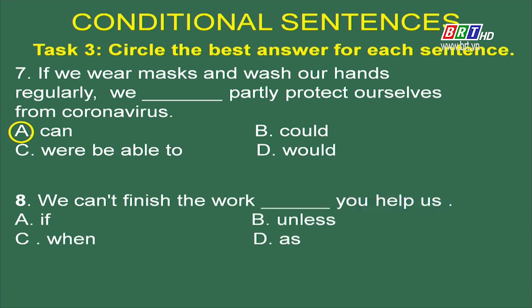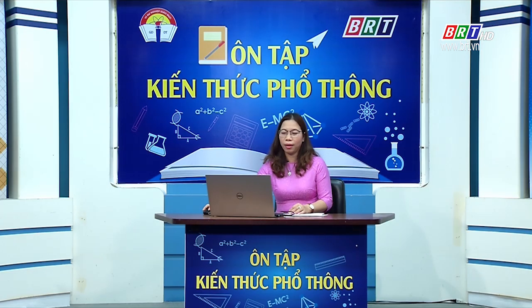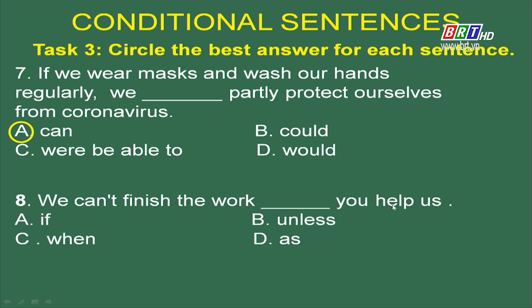Sentence 8: We can't finish the work / (___) you helped us. Nghĩa nào phù hợp? Lựa chọn A (if) → nếu bạn giúp chúng tôi, chúng tôi không thể hoàn tất công việc — không chính xác. Lựa chọn C (when) và D cũng không phù hợp. Trừ phi bạn giúp chúng tôi — phù hợp. Vậy lựa chọn B (unless) là lựa chọn đúng.